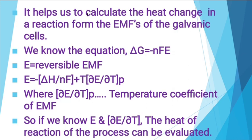We know that delta G is equal to minus nFE, meaning the change in Gibbs-Helmholtz energy equals minus N times Faraday's constant times EMF. When the EMF form is used, the equation is written as E equal to minus one over NF times bracket delta H plus T times del E divided by del T at constant pressure. Here del E divided by del T at constant pressure represents the temperature coefficient of EMF. If we know E and del E divided by del T, and temperature is known, we can calculate the enthalpy change or the heat of reaction.